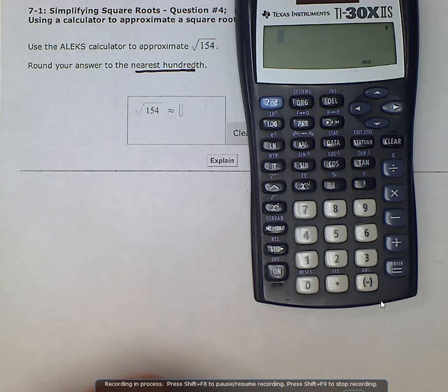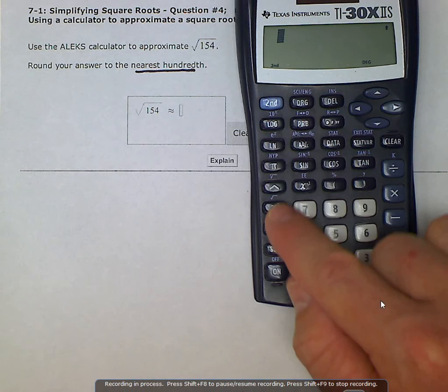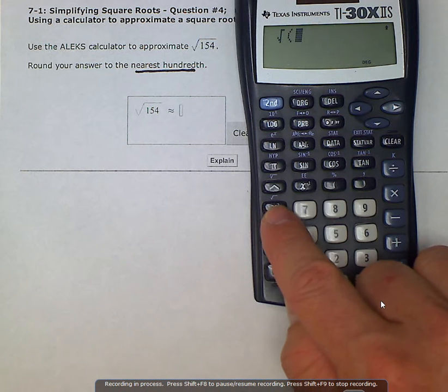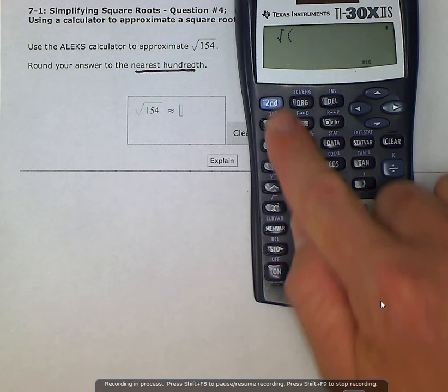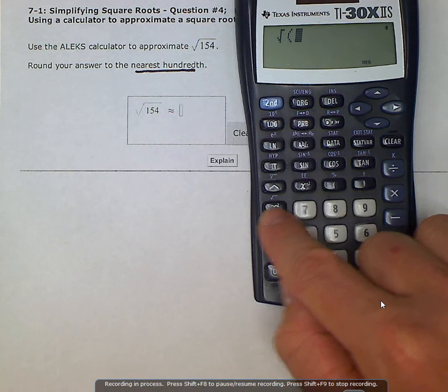We just take our calculator and as long as we know which buttons to push, we're good to go. So we're gonna go second, and then we're gonna hit this x squared button, which gives us the radical sign up above it. That's why we use the second. All of these purple signs here above the buttons are the second operation of the button.